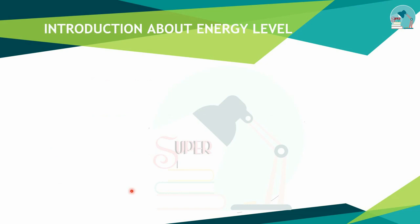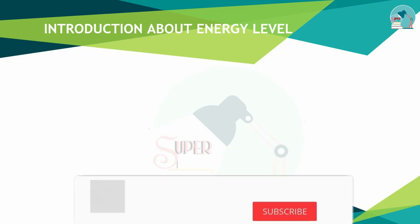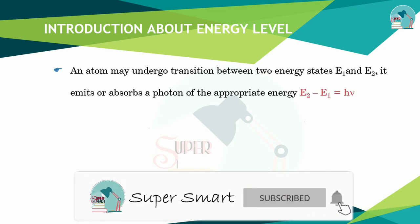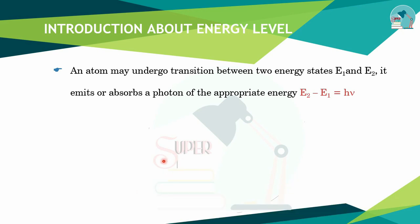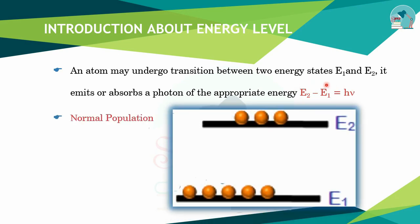The laser light will be produced by energy levels. What is the energy level? Atoms will be released from the energy level. The energy level is E2 and E1. So it will be released from the energy level. E1 is the ground state and E2 is the upper layer state.